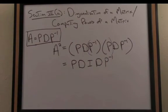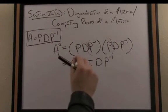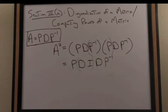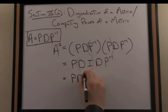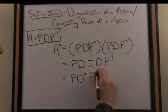So if I reassociate again, D times the identity is D. In other words, I have D times D, which is D squared in the middle. So I get the following result: PD squared P inverse.